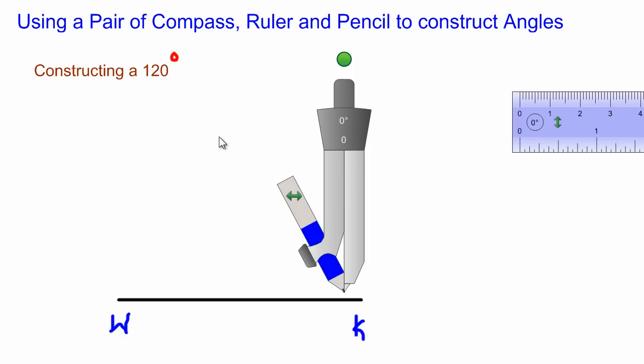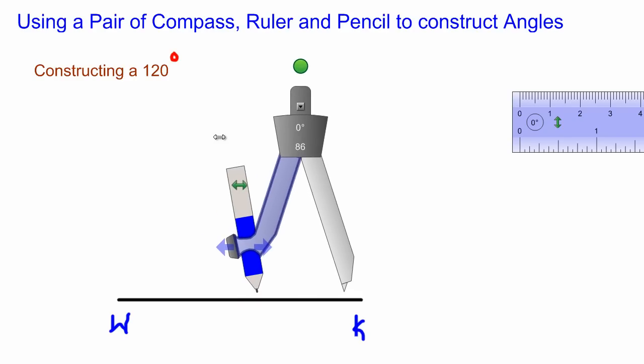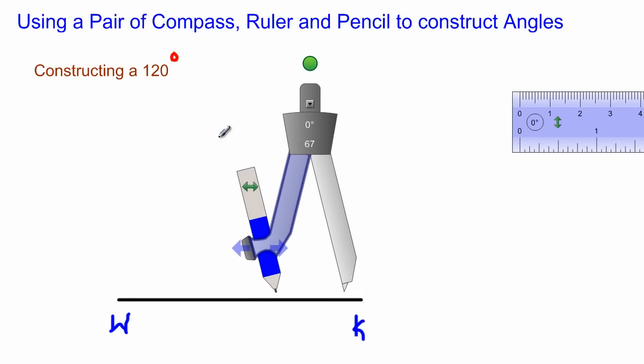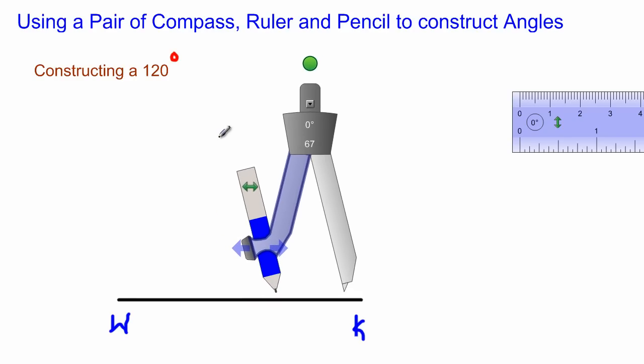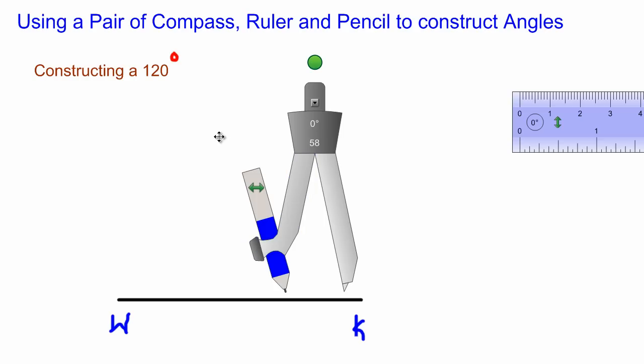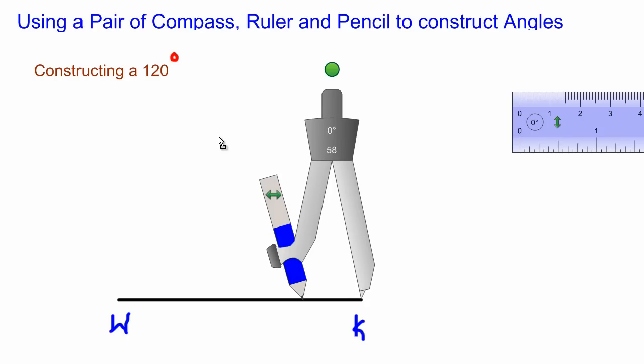I would take out my pair of compass and open it to any radius. It doesn't matter any radius, but as I've always said, open it up to a radius that's pretty comfortable to you. You don't have to open it up too wide. I'm going to work with that for now. The next step is to place the point of your compass at the point K where they ask you to construct the angle.